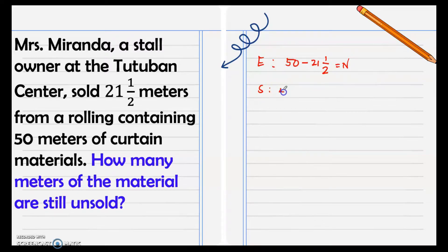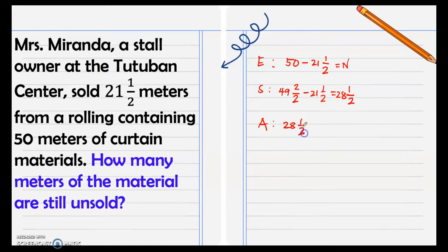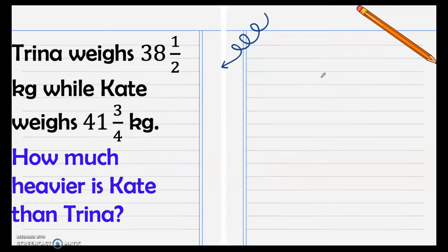We solve 50 minus 21 and one-half. We regroup 50 and make it 49 and two over two, which is still equal to 50. We write two over two so that we can easily subtract from 21 and one-half since the fractions are similar. Two minus one is one — copy the denominator. Then subtract the whole numbers: 49 minus 21 is 28. The answer: 28 and one-half meters of material are still unsold.